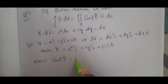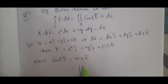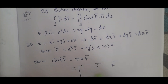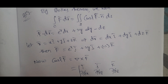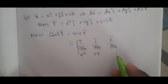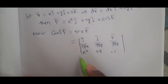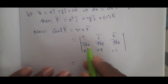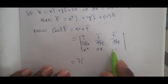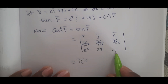Now curl F equals the determinant with i, j, k in the first row; ∂/∂x, ∂/∂y, ∂/∂z in the second; and e^x, 2y, −1 in the third. Expanding: i·(∂(−1)/∂y − 0) = 0.